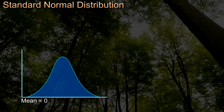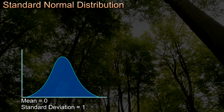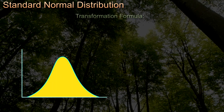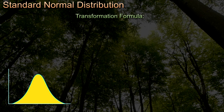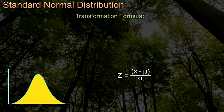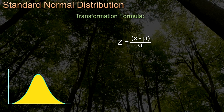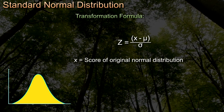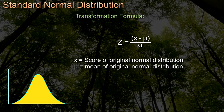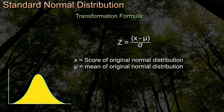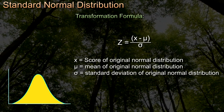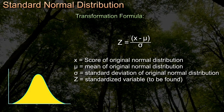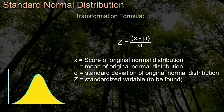The standard normal distribution has a mean of zero and a standard deviation equal to one. We can look at the area under the curve by converting into what are called z-scores. Any normal distribution can be converted using the transformation: z equals x minus mu divided by sigma, where x is the score of the original normal distribution, mu is the mean, and sigma is the standard deviation of the original normal distribution. Z is the standardised variable to be found.